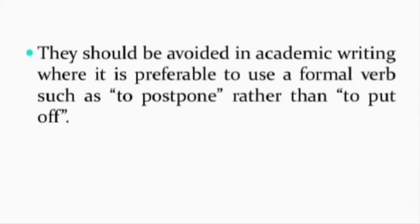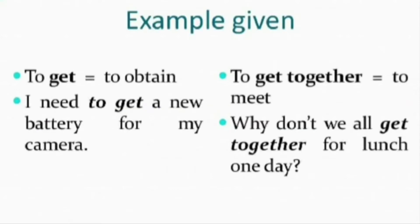Phrasal verbs should be avoided in academic writing, where it is preferable to use a formal verb. For example, use 'to postpone' rather than 'to put off'. To give a few examples: 'to get' means to obtain — 'I need to get a new battery for my camera.' Another meaning of 'get' is to meet — 'Why don't we all get together for lunch?'